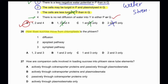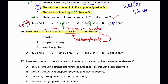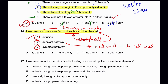Question 26: How does sucrose move from chloroplast to the phloem? The chloroplast is in a palisade mesophyll cell. Movement toward the phloem requires sucrose to dissolve in water. After dissolving, it can move by diffusion through the cell wall route — the apoplastic pathway — and also through the symplastic pathway via plasmodesmata. So A is the correct answer.